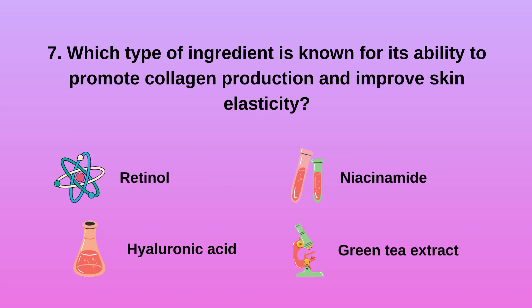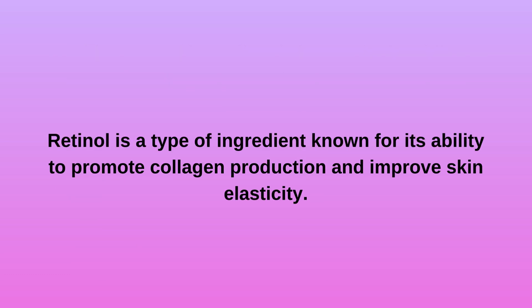7. Which type of ingredient is known for its ability to promote collagen production and improve skin elasticity? A. Retinol. B. Hyaluronic acid. C. Niacinamide. D. Green tea extract. Retinol is a type of ingredient known for its ability to promote collagen production and improve skin elasticity.